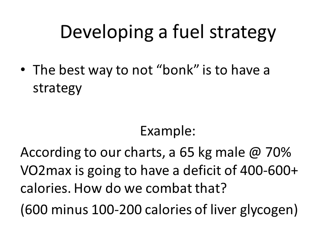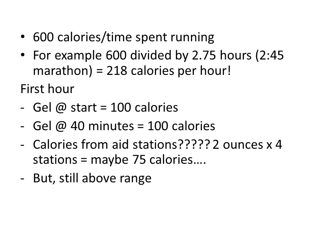Developing a fuel strategy is the best way not to bonk — have a strategy, practice it, and be comfortable taking that number of calories on during the run. For example, a 65-kilogram male at 70% VO2 max is going to have a deficit of 400 to 600 calories, maybe a little more. For our worst-case scenario, let's say 600 calories and they're running a 2:45 marathon — that comes out to 218 calories per hour, which is significant, but it can still be done.